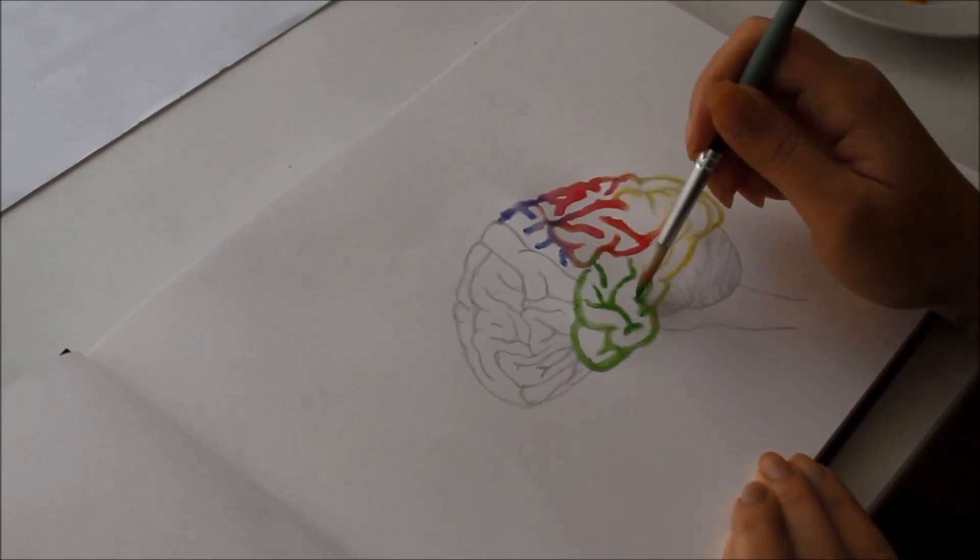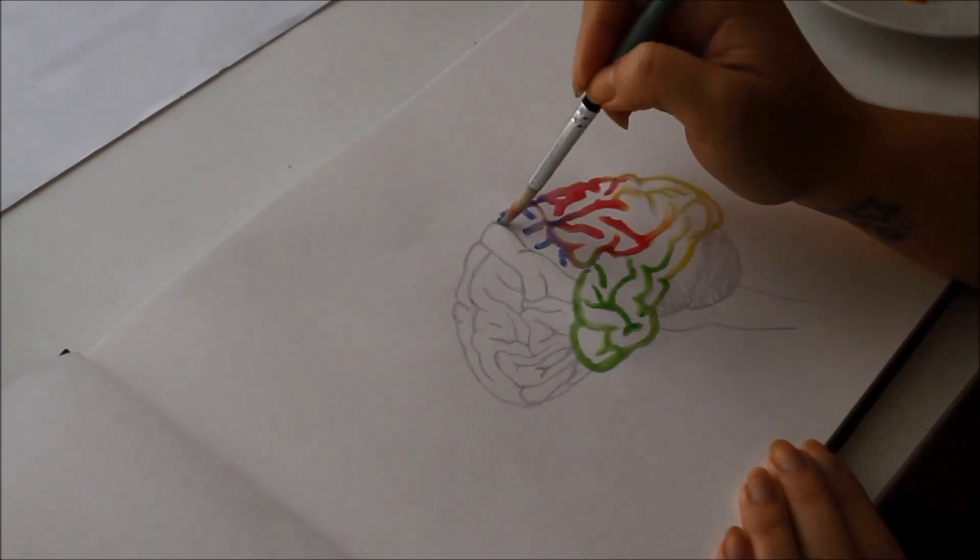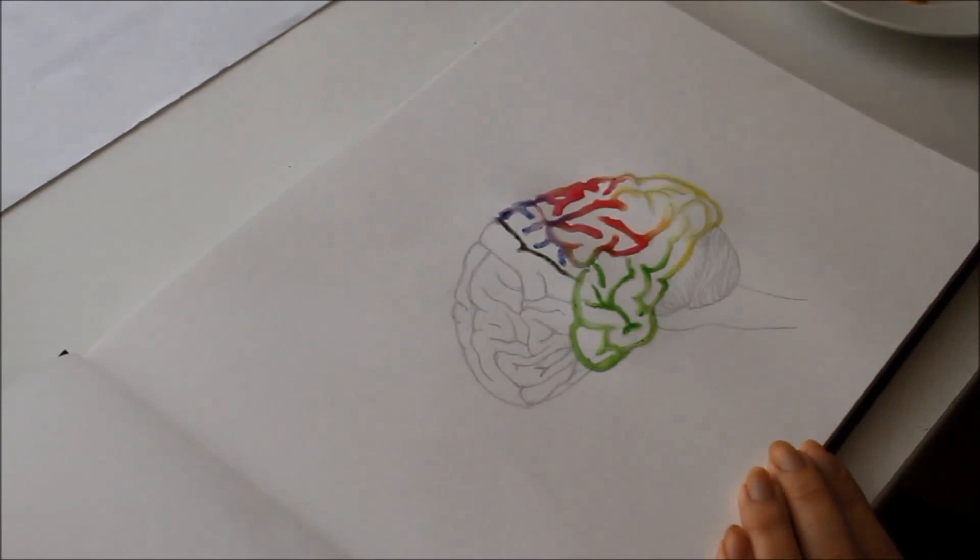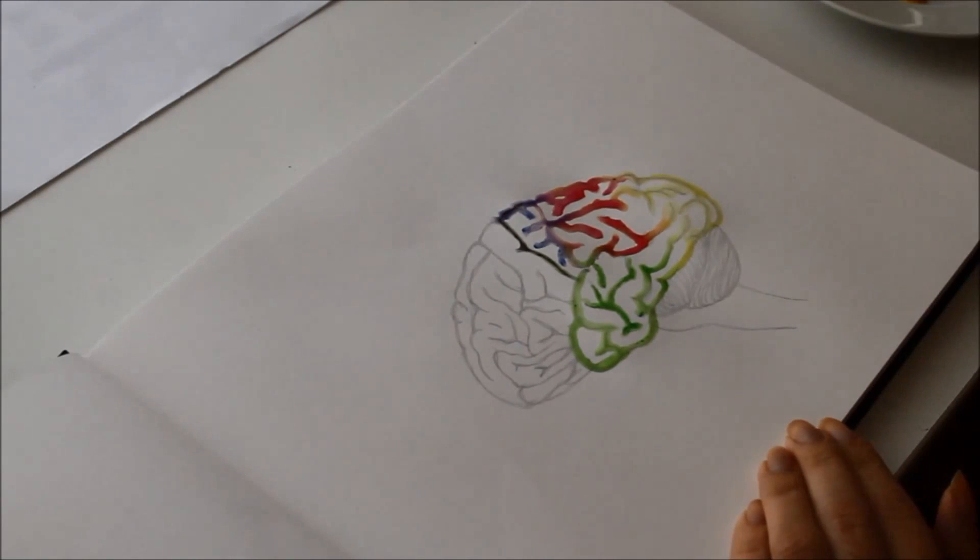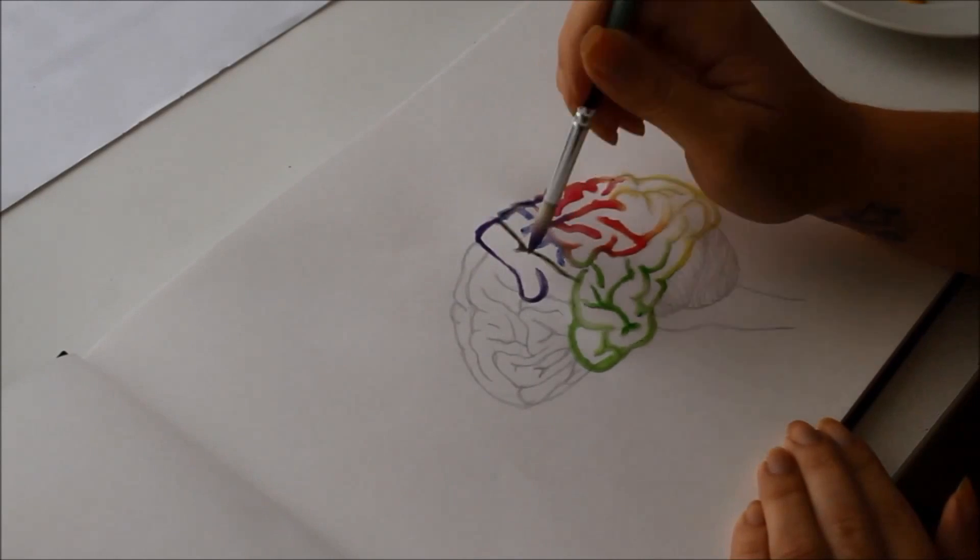In this video I'll be taking you through the anatomy and function of the brain, looking at the occipital, parietal, frontal and temporal lobes, as well as the spinal cord and cerebellum.